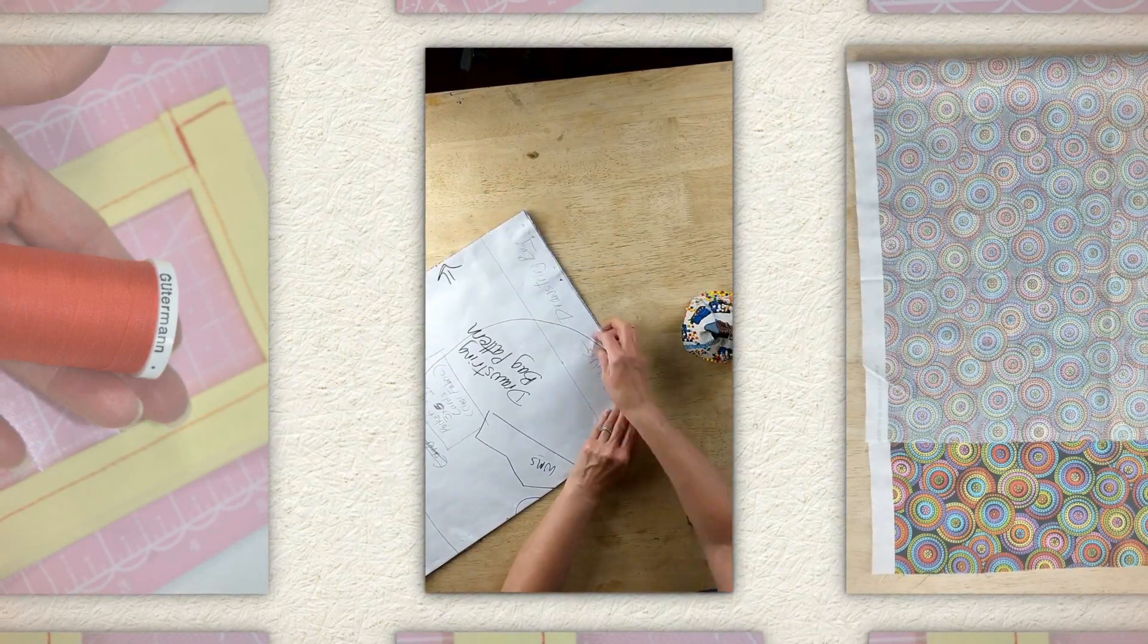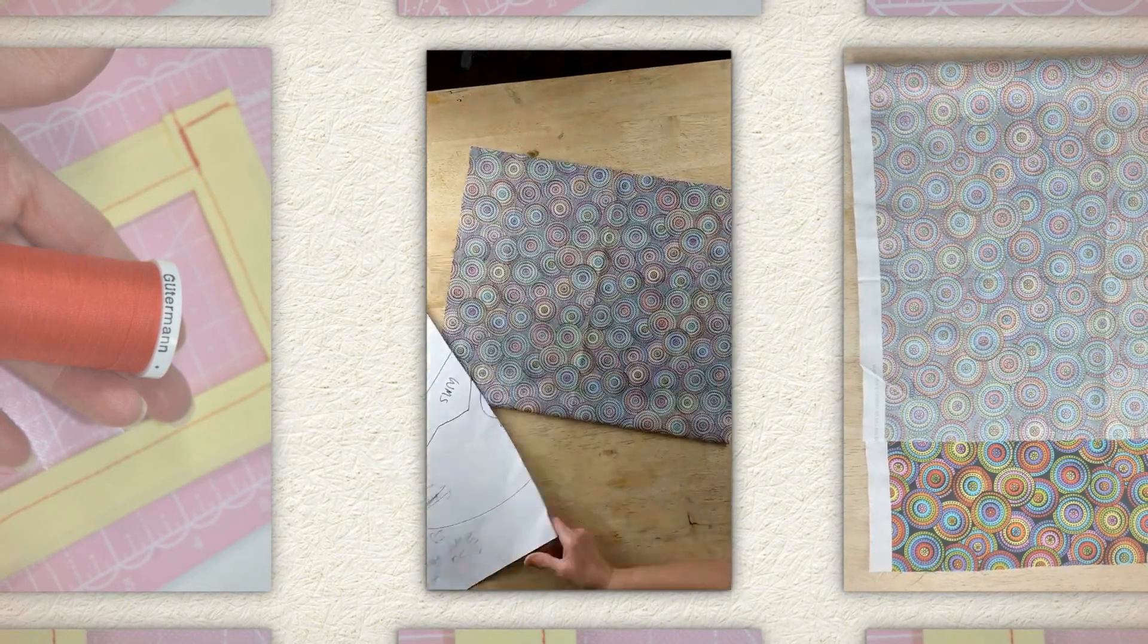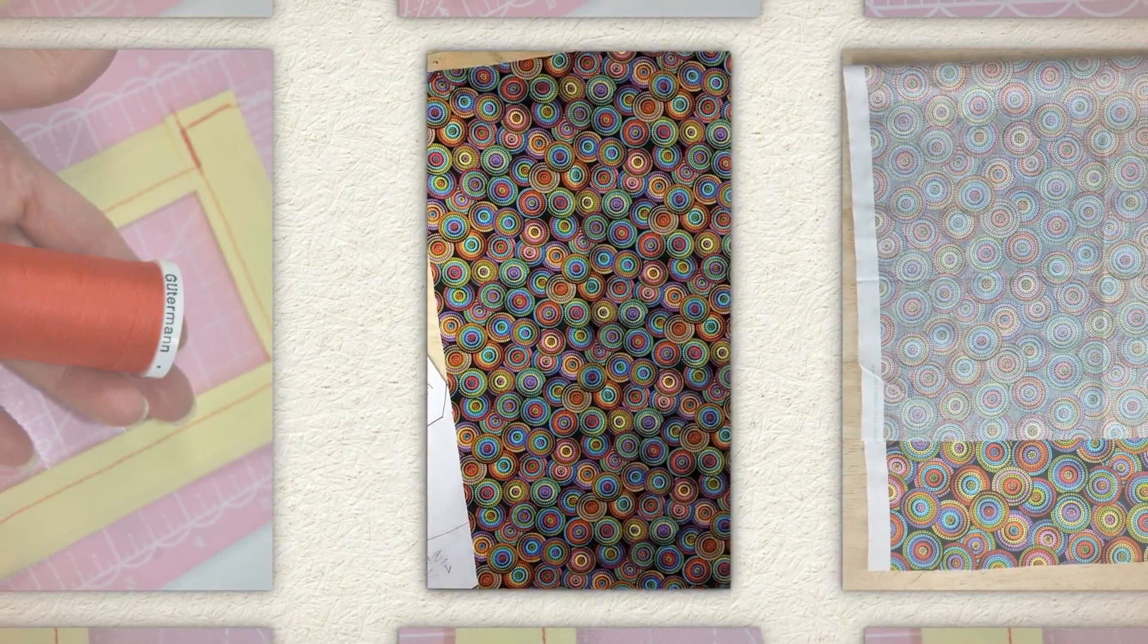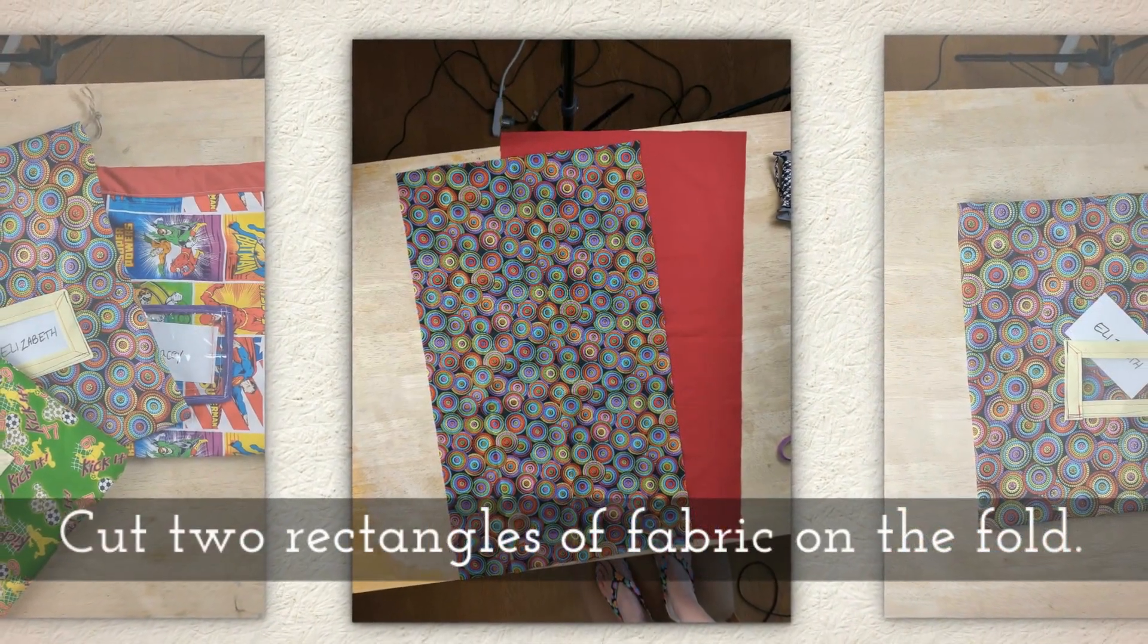And that's what it means by cut on the fold. So I open it up and you can see it's all one piece. You're going to cut two rectangles of fabric on the fold like that.